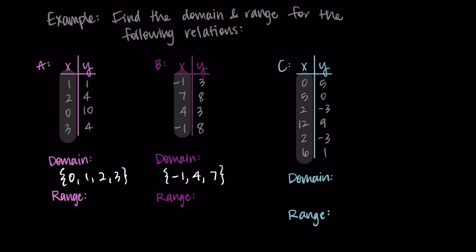All right. Then lastly, for relation C, let's go ahead and write the input values. Those are our domain. I'm going to write them in order from least to greatest. And I'm going to remove the repeated input of 2. So I have {0, 2, 5, 6, 12}. And that's my domain.